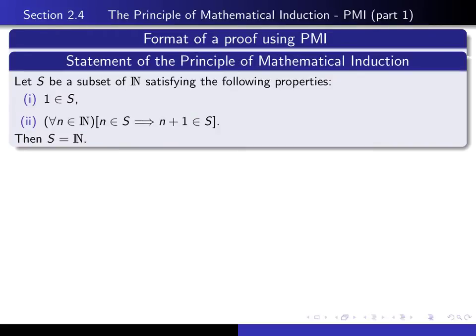Here's one way to state the principle of mathematical induction. It deals with a subset S of the natural numbers, and it gives conditions on S which will guarantee that S is all of the natural numbers. It says that if 1 is an element of S, and if for every natural number n, assuming n is an element of S allows us to deduce that n+1 is an element of S, then S equals the entire set of natural numbers.